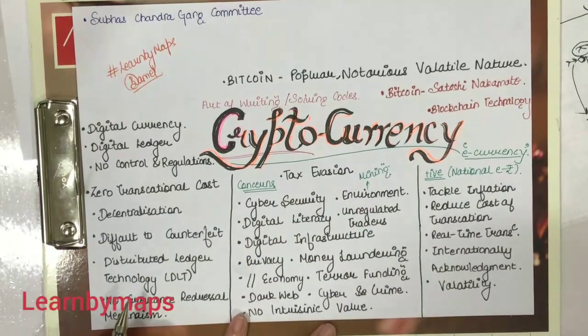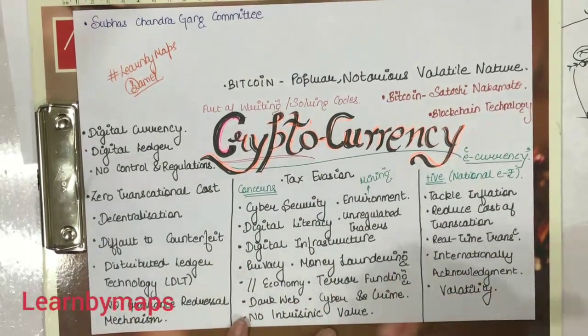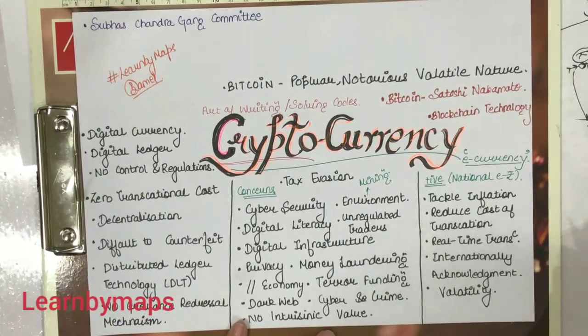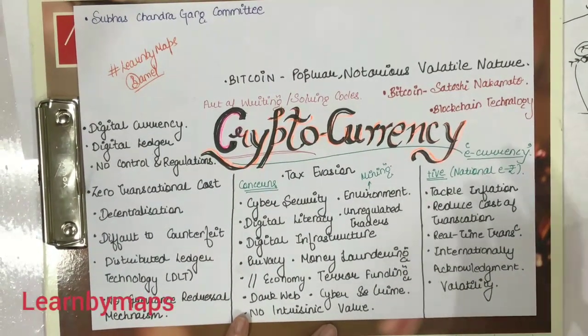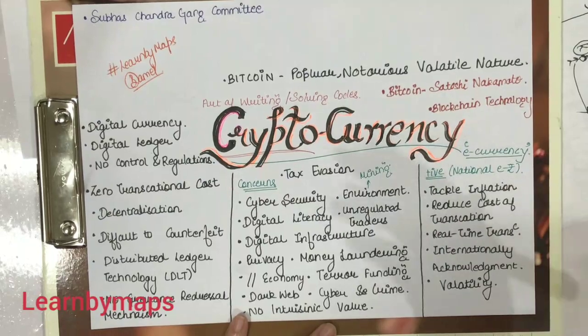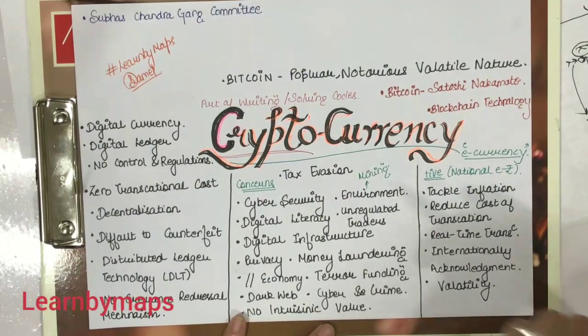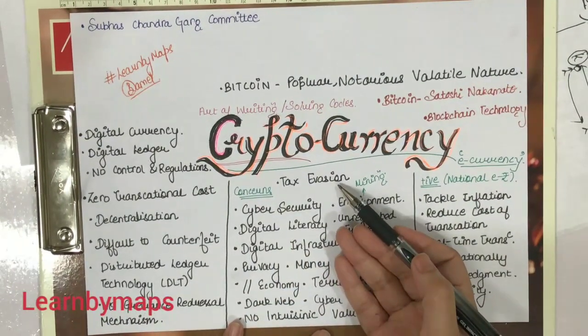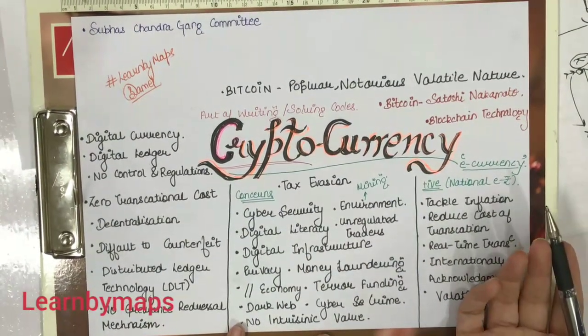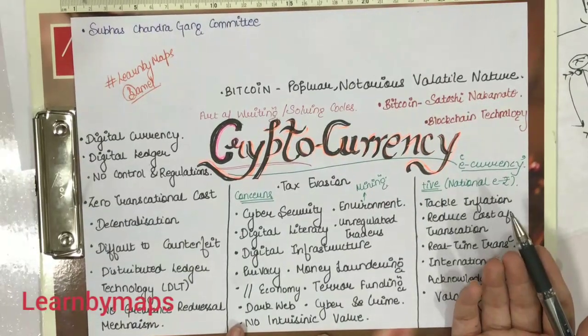First of all, there is tax evasion. If we use international money and no one is a regulator, then definitely people will evade their taxes and save their taxes. That will again not be good for the Indian economy.